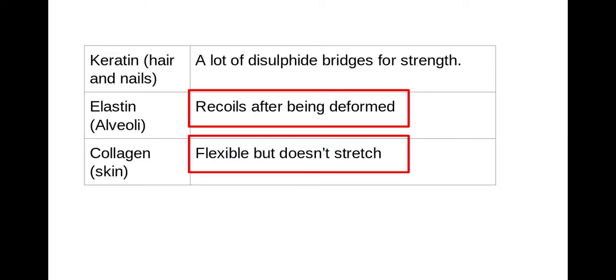There are three main fibrous proteins we need to know about: keratin, elastin and collagen. Anything here in a red box is taken directly from the mark scheme, so we do need to be aware of those properties in particular.